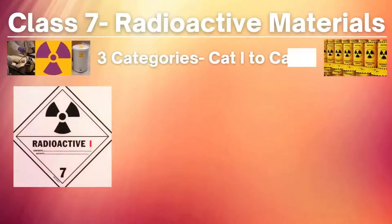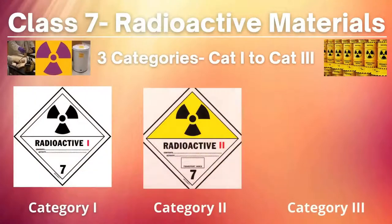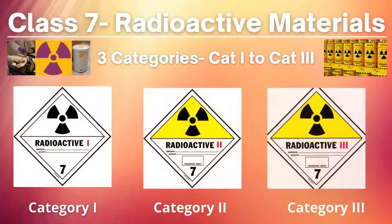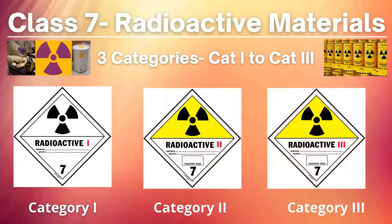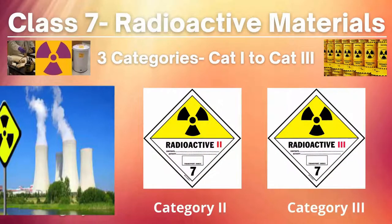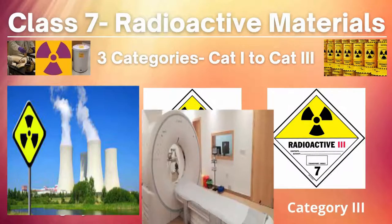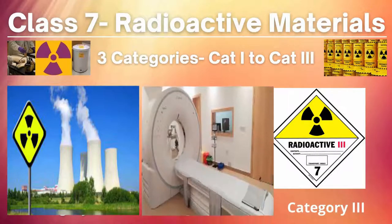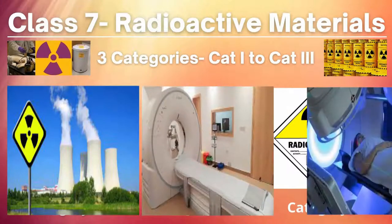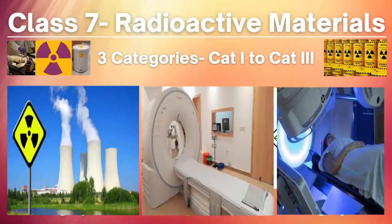Now the next one is Class 7: Radioactive Materials. It has no divisions. Radioactive materials are used as radionuclides in the nuclear power sector and in the medical industry for CT scans and cancer treatment programs.